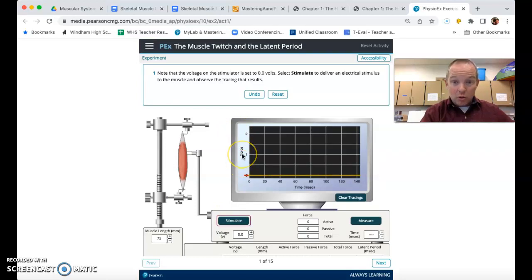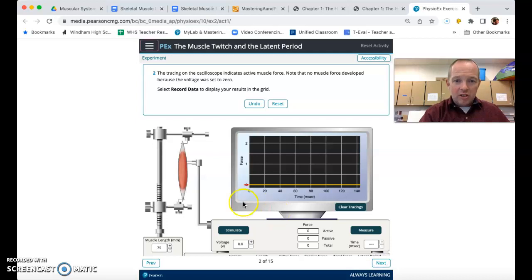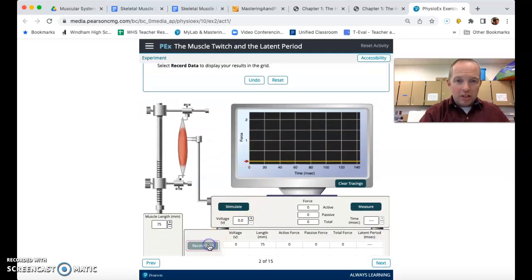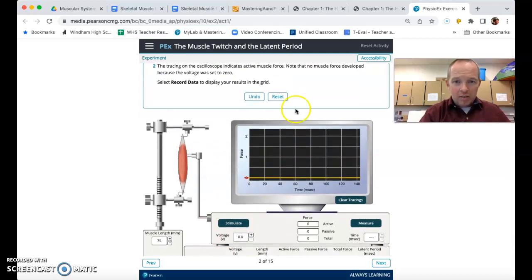And we see that there's a flat line. This y-axis, which measures force, doesn't move. So clearly there is a threshold stimulus, a stimulus below which we're not actually going to get any sort of force generated by the muscle. And remember force is generated when the muscle contracts or shortens. So we are going to click on next. We're going to record our data here and then we're going to move forward.